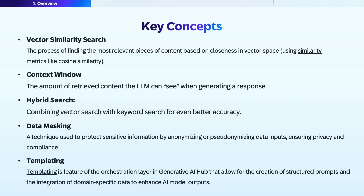To have a better understanding of this topic, it's beneficial to understand some core concepts. Vector similarity search is a process of finding relevant information chunks close to the query context. In vector space, there are several similarity metrics which can be used. When the LLM context is augmented with relevant information, it is more likely to provide better responses. Context size is the amount of content the LLM can see when generating a response. There are different search mechanisms for vector search, but to improve results, you may use hybrid search, which combines both vector search and classical keyword-based searches.